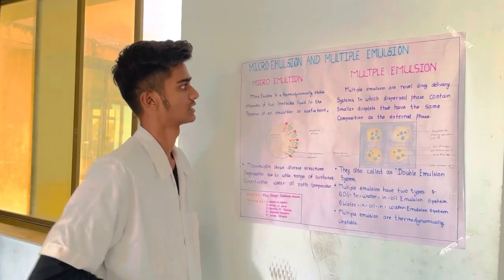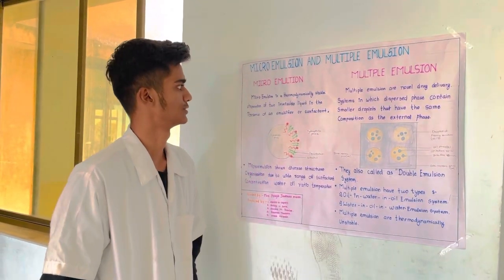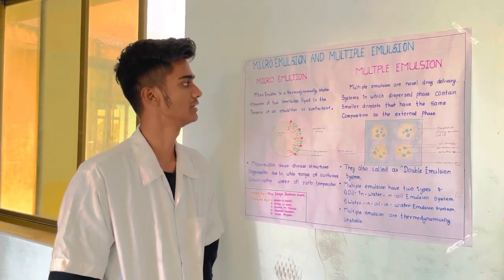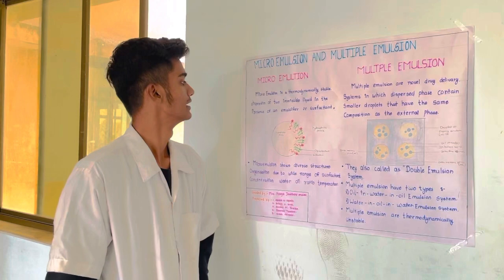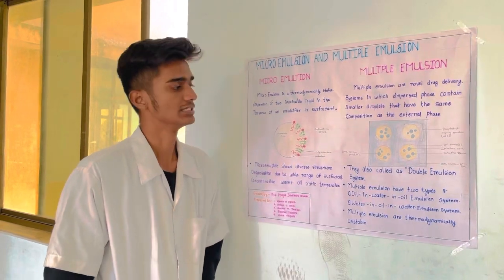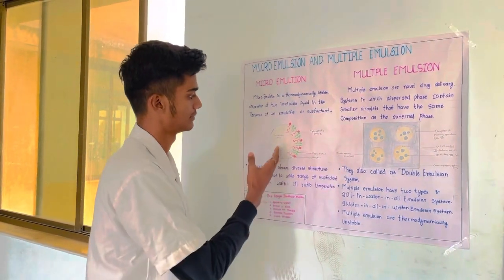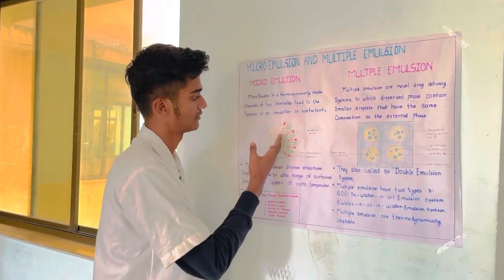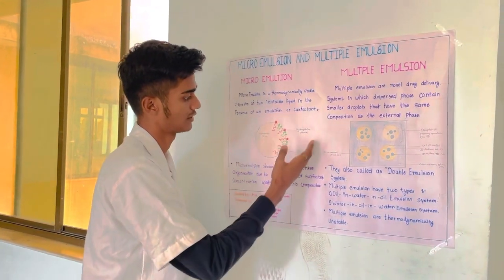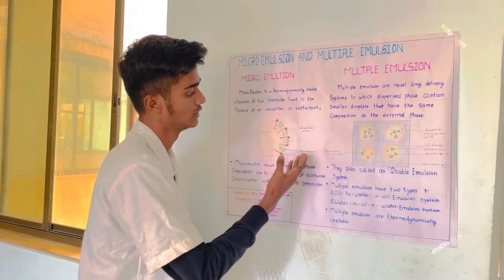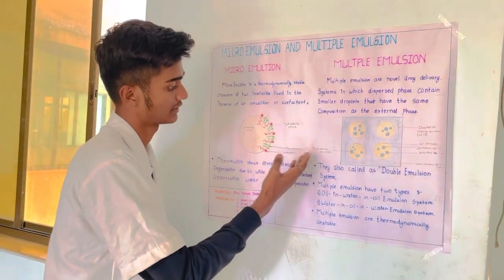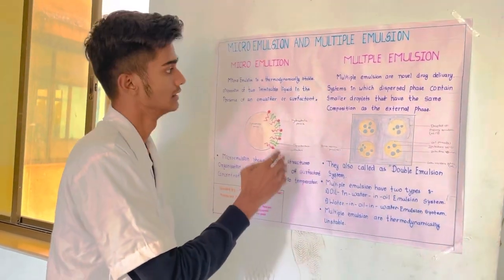Microemulsion is a thermodynamically stable mixture of two immiscible liquids in the presence of emulsifier and surfactant. In which the hydrophilic phase is present. Two most important components are surfactant.